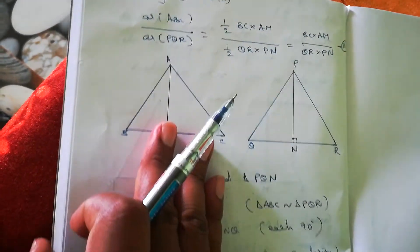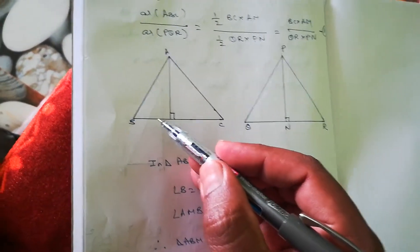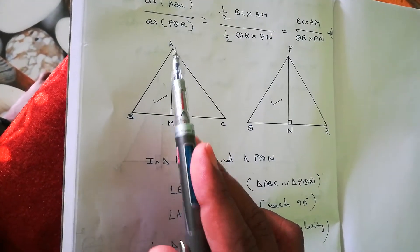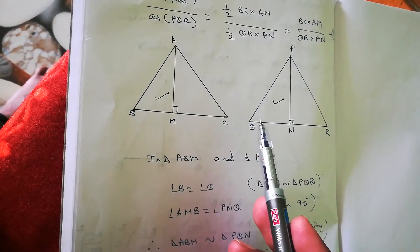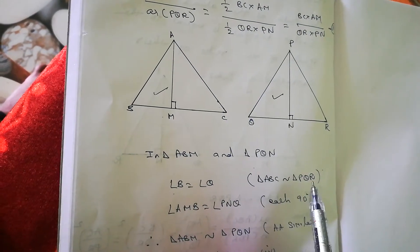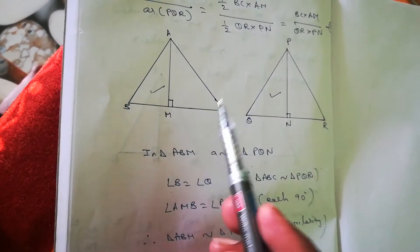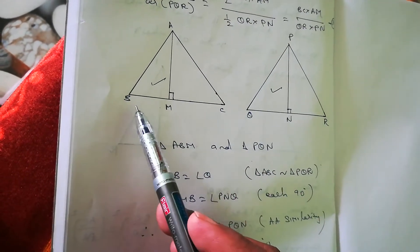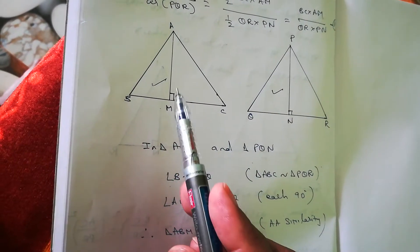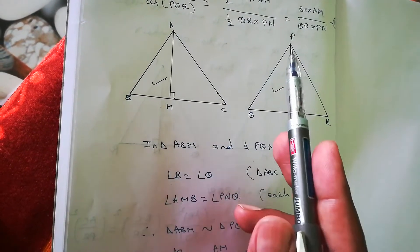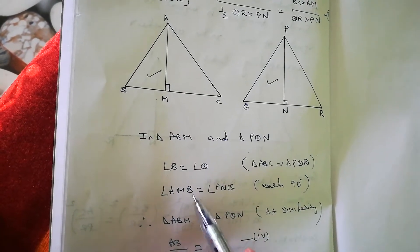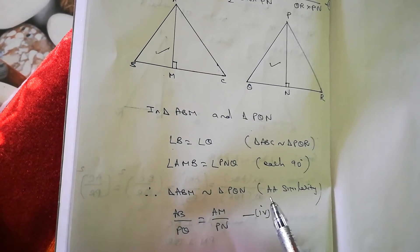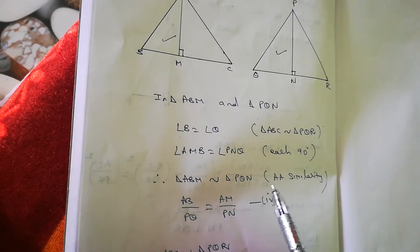Now we take triangles ABM and PQN. Angle B equals angle Q because triangle ABC is similar to triangle PQR, so corresponding angles are equal. Also angle AMB equals angle PNQ equals 90 degrees. Therefore triangle ABM is similar to triangle PQN by Angle-Angle similarity.